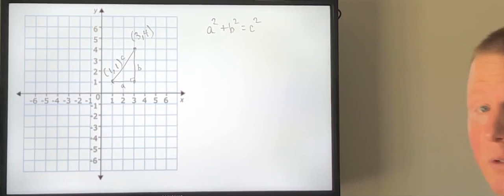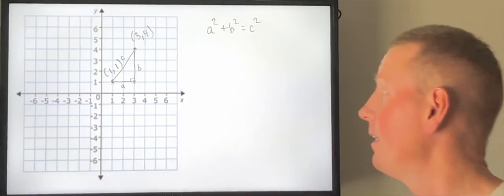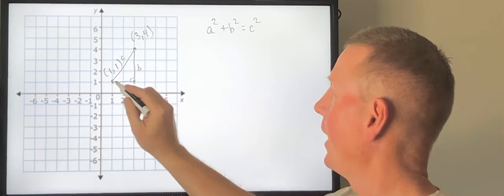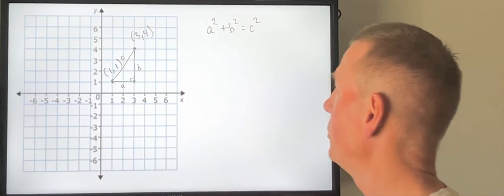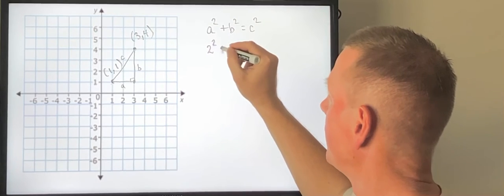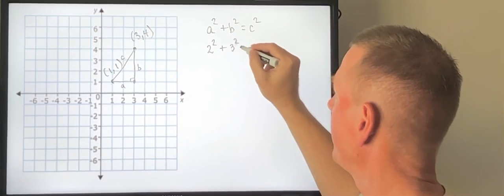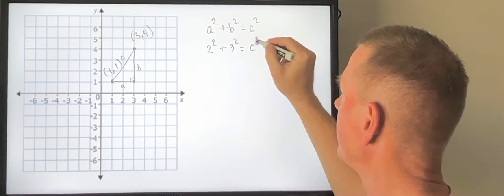So I could utilize the Pythagorean Theorem to find the distance between these two points. I know that a is 2 so I could do 2 squared. I know that b is 3 so 3 squared and then I don't know what c is.